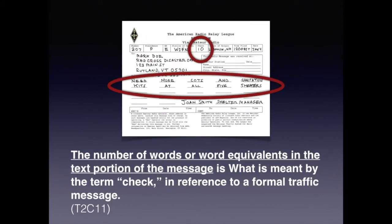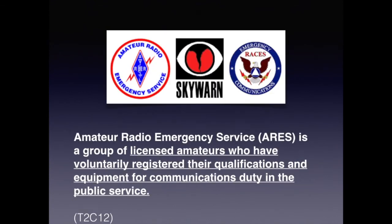In an effort to increase the accuracy of a radiogram message, there is a box labeled 'check.' Its purpose is to record the number of words used in the message segment. In this message, ten words were used and the number ten was recorded in the box labeled check. For the exam, you should know that the number of words or word equivalents in the text portion of the message is what is meant by the term 'check' in reference to a formal traffic message. You also need to know that Amateur Radio Emergency Service, ARES, is a group of licensed amateurs who have voluntarily registered their qualifications and equipment for communications duty in the public service.